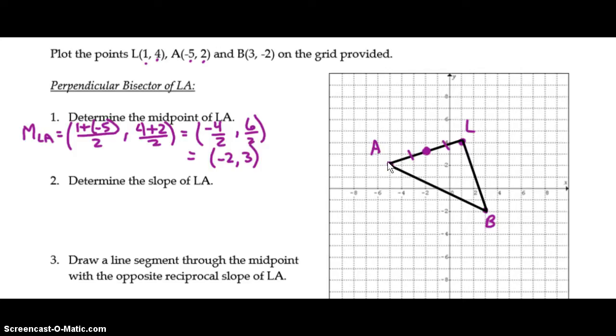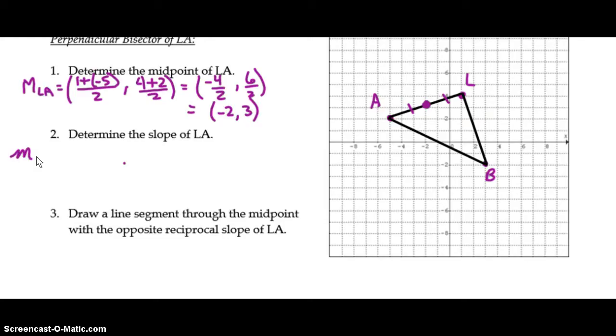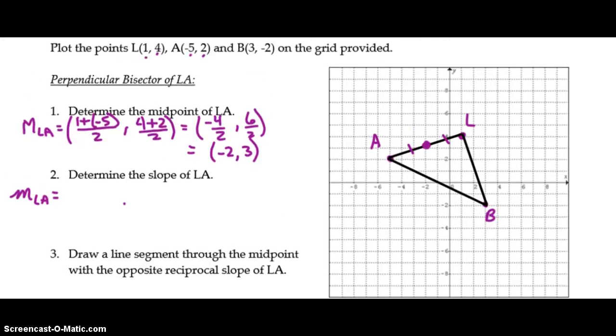Because it has to be perpendicular to LA, we need the slope of LA. So it is y2 minus y1 over x2 minus x1. So that works out to negative 2 over negative 6. Because both numerator and denominator are negative, your answer is positive. And 2 over 6 in lowest terms is 1 third.